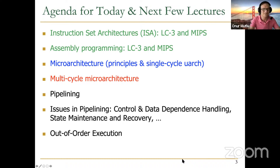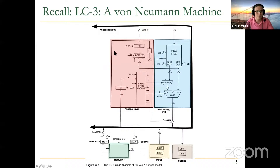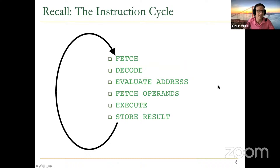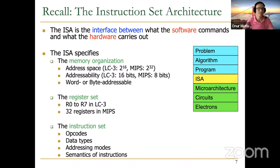Recall we introduced the von Neumann model last week. It has five components. We also talked about an example von Neumann machine — LC-3 was one example, MIPS was another. We've started studying both. We also talked about the instruction cycle: an instruction gets fetched, decoded, evaluates its address, fetches operands, executes, and stores the result. Then you fetch the next instruction — that's the principle of sequential execution.